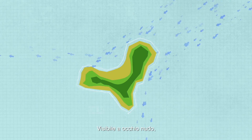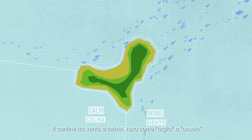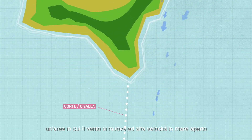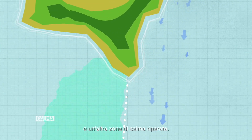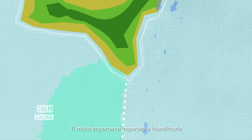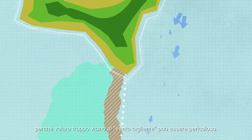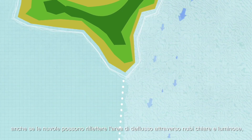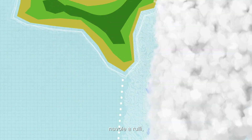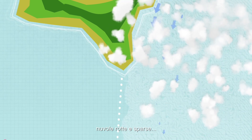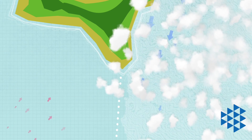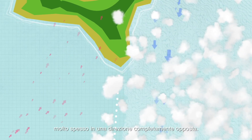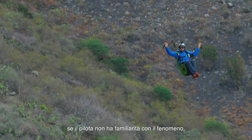Visible to the naked eye, the borderline between wind and calm — known as the cut or shear — limits two distinct areas: one where the wind moves at high speed offshore, and another sheltered calm area. It is very important to learn how to identify them, because flying too close to the wind cut can be dangerous. The sea is the best indicator, although clouds can also reflect the outflow area through bright spells, roll clouds, and broken or scattered clouds. At ground level near the wind cut or wind shear, the breeze usually originates in the opposite direction of the outflow, very often in the completely opposite direction. Flying over this area is very dangerous if the pilot is not familiar with the phenomenon.